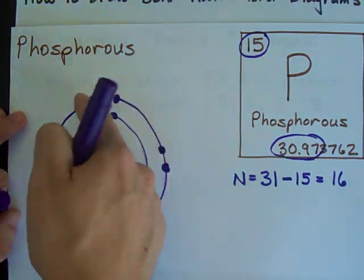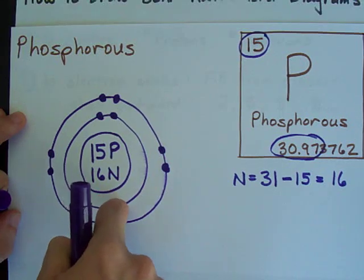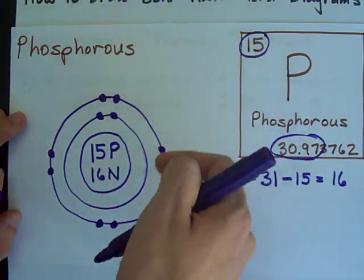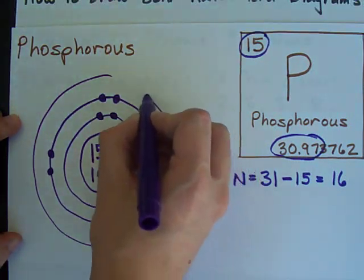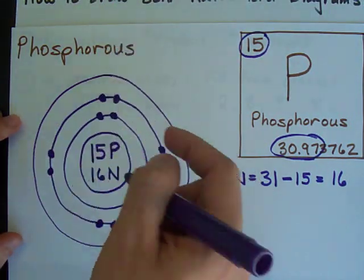Now I have ten electrons. That's still not enough. I need 15. So, I draw a third circle around, and I can put up to eight electrons in here as well.